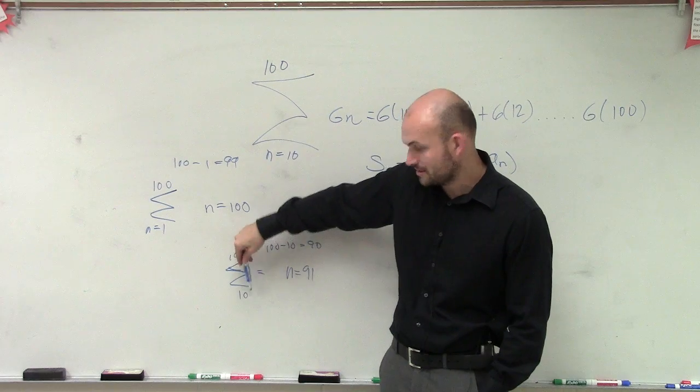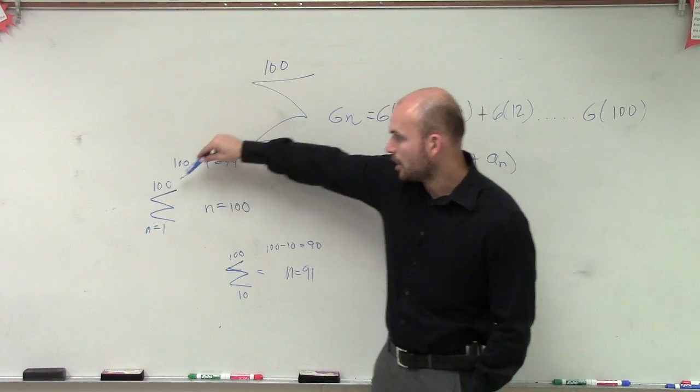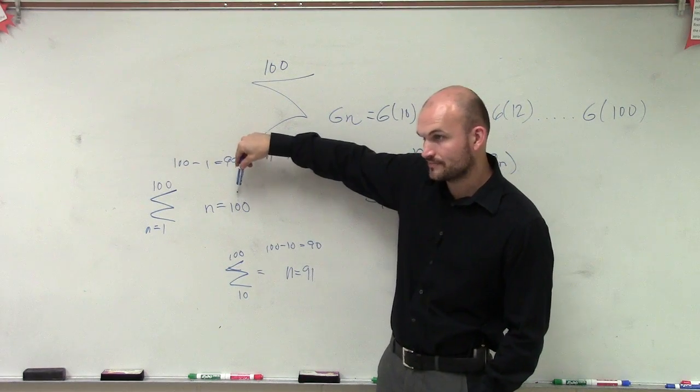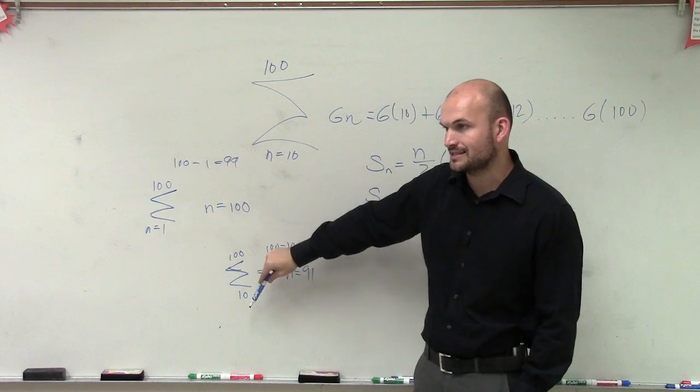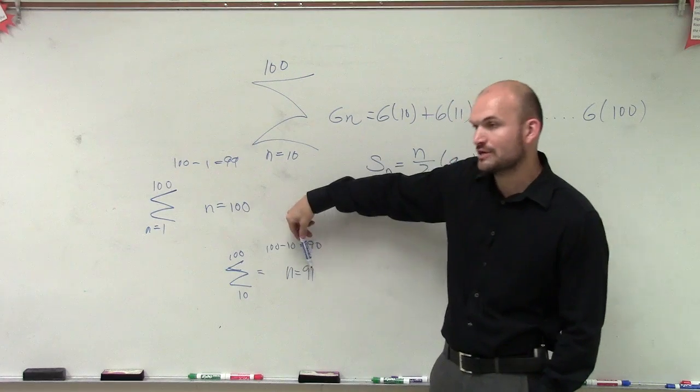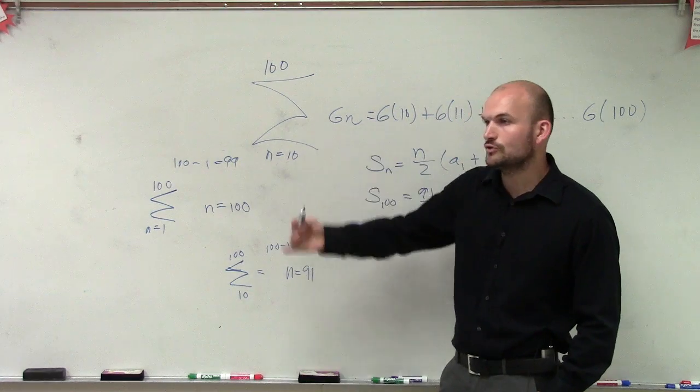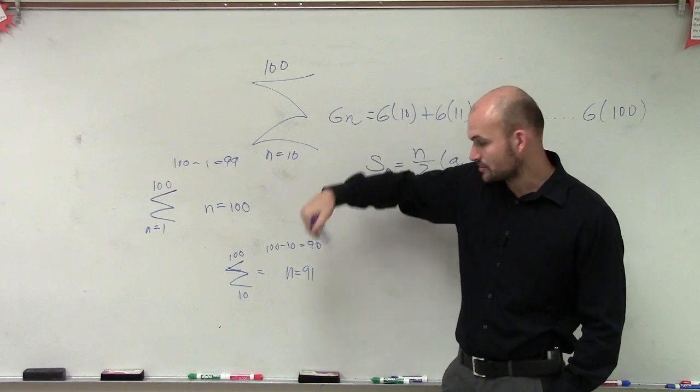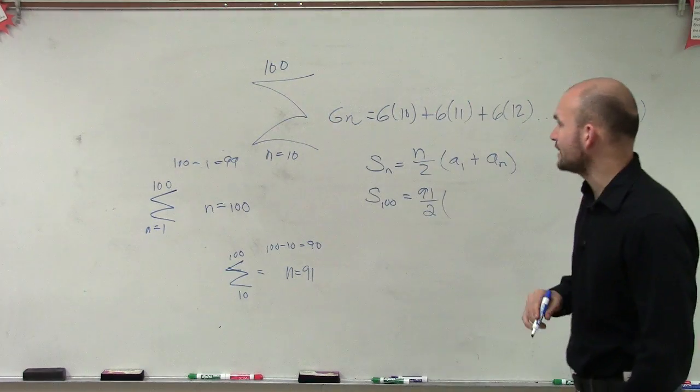100 minus 10 gives you 90, right? 100 minus 1 is 99. We said it's not 99 terms. It's 100 terms. So therefore, you're not subtracting them. Well, you could subtract them, but you've got to make sure you add that extra value, because we're including 10 all the way up to 100. You're including 10, so it's going to be an extra value. So it would be 91 over 2.